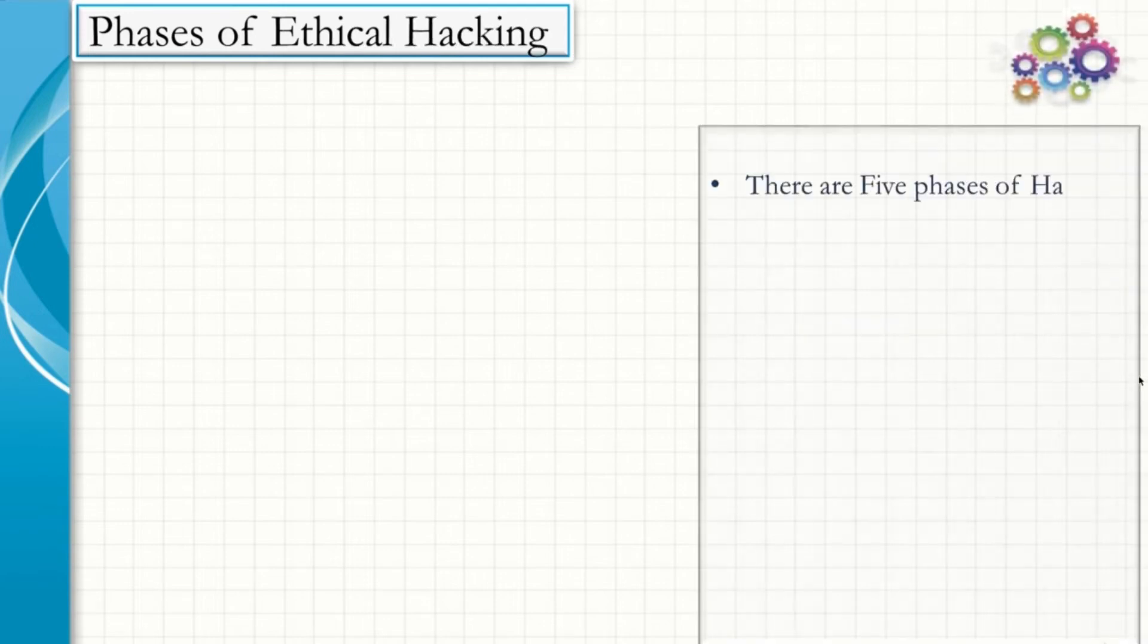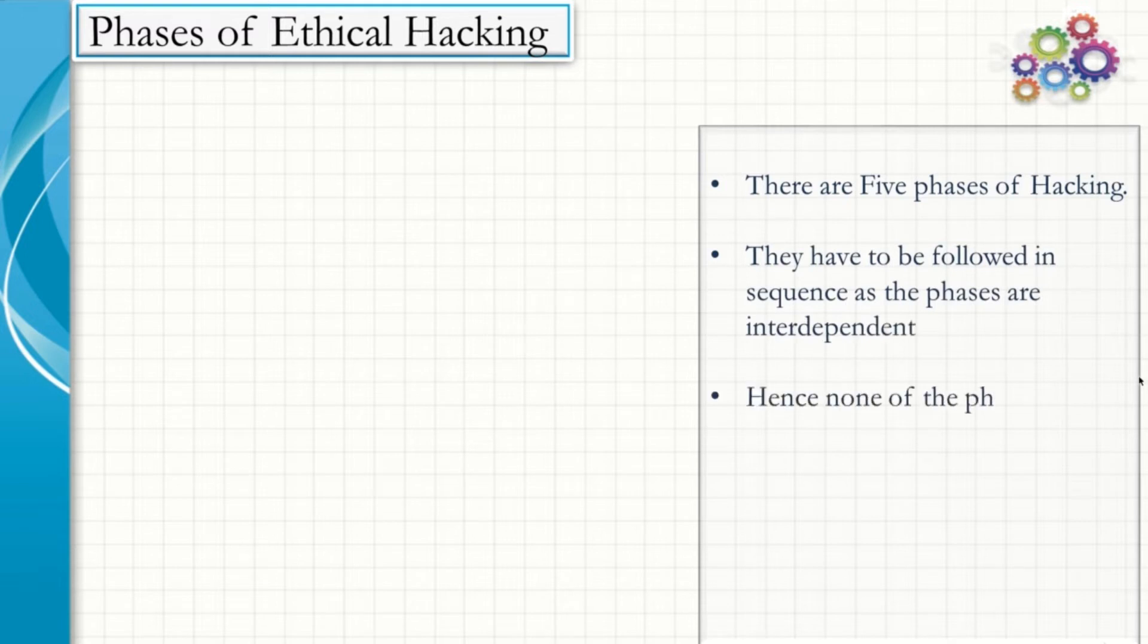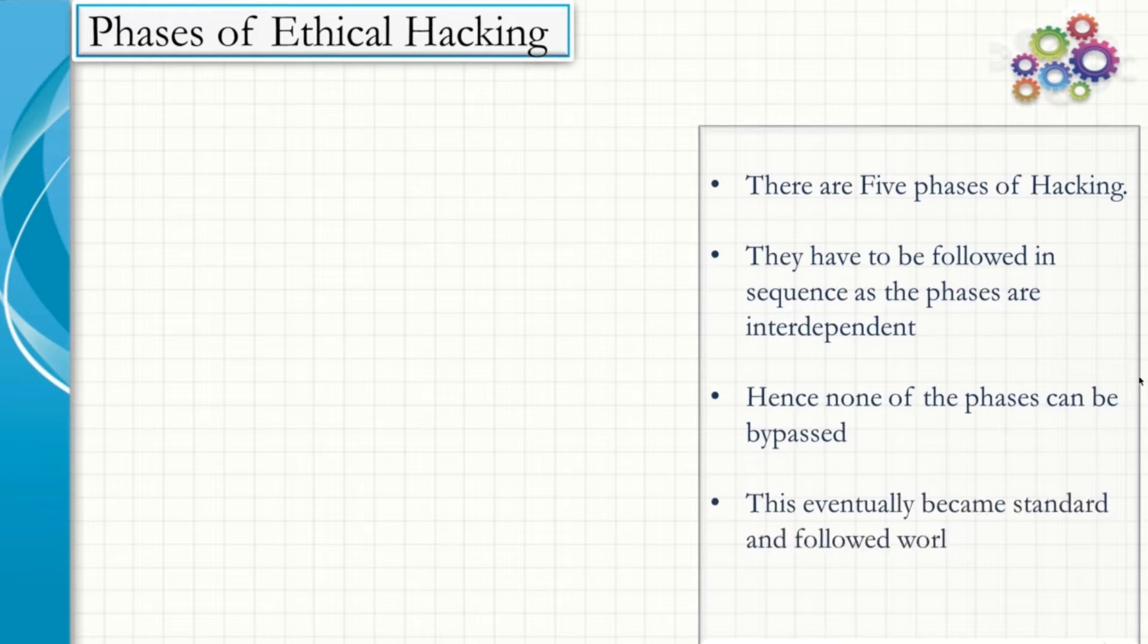There are 5 phases of Hacking. They have to be followed in sequence as the phases are interdependent. Hence, none of the phases can be bypassed. This eventually became standard and followed worldwide. However, people do further divide them in more phases.